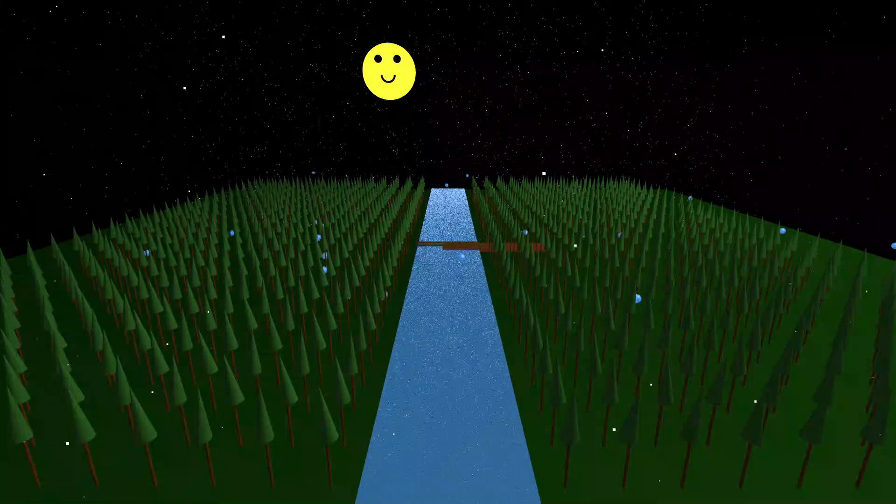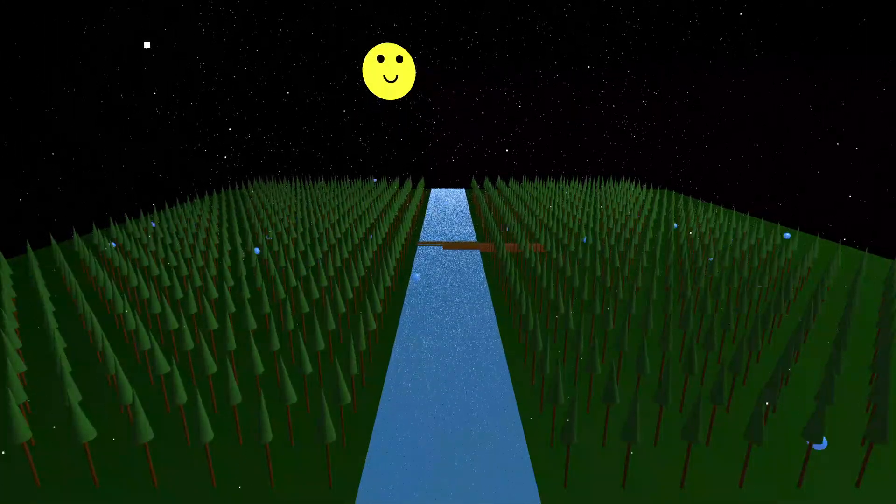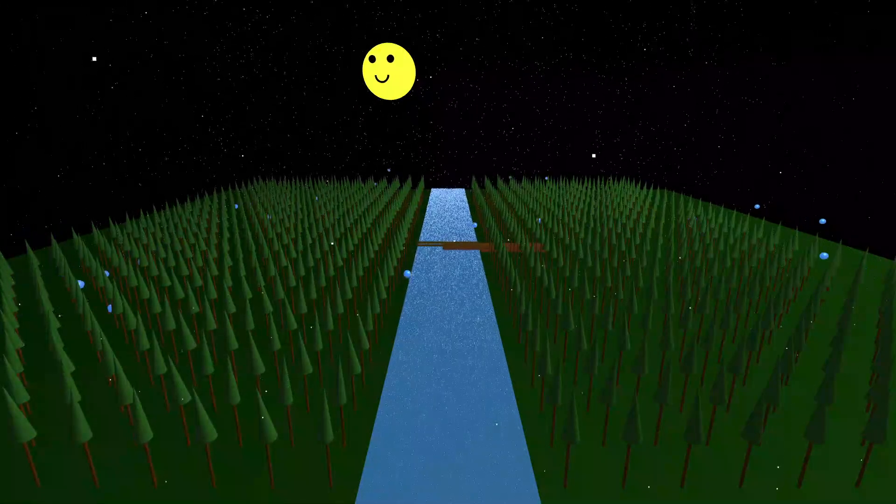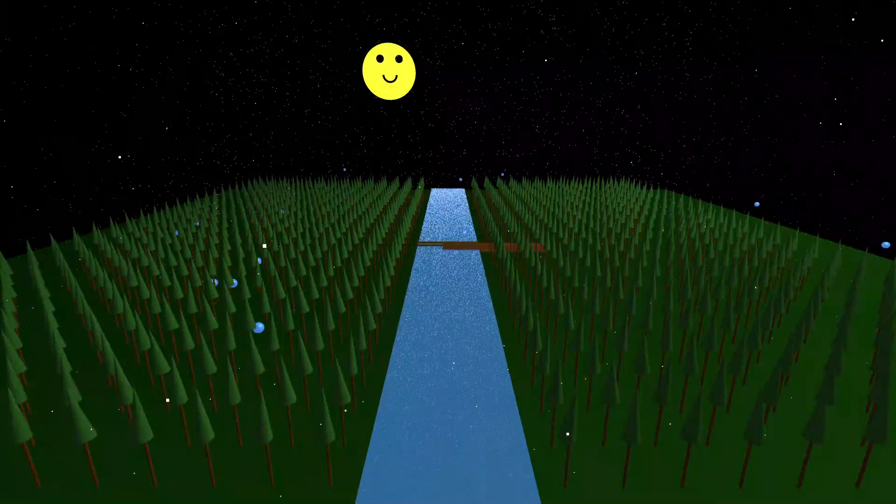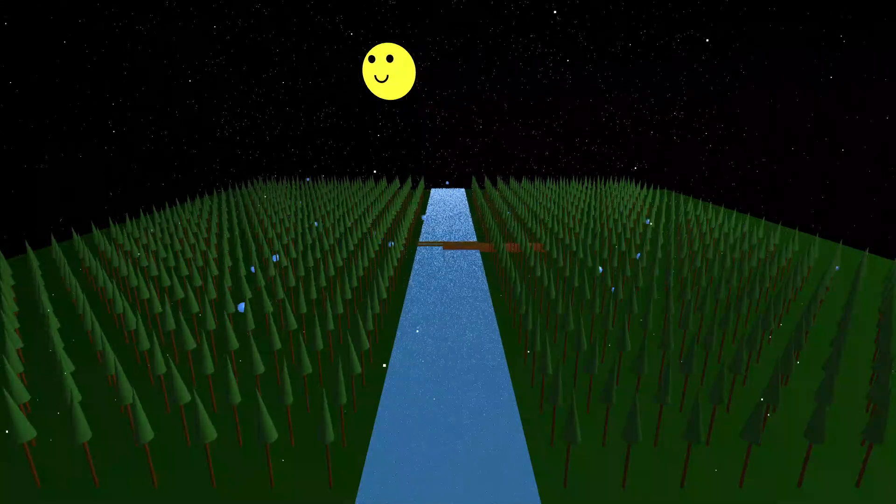So instead of paint or clay, this AI is manipulating digital noise to create. And it's not just 2D images we're talking about. This research mentions applying this to videos, 3D models, even designing new proteins. It's really mind-blowing, and the results are incredible.